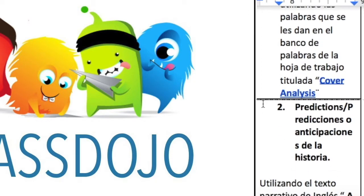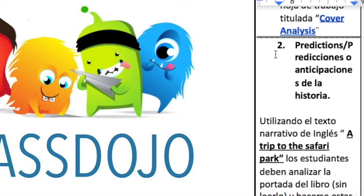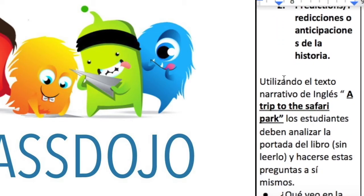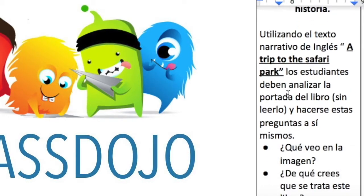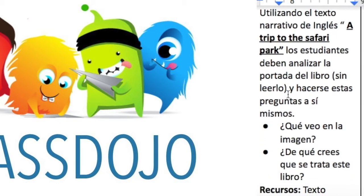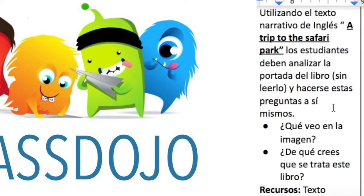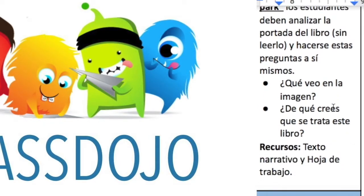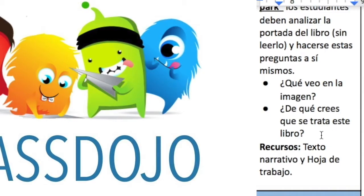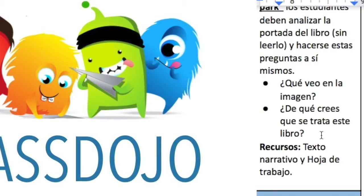Escribamos la fecha, recuerden, amores. La actividad número dos es también de nuestro libro A Trip to the Safari Park y tiene que ver con las predictions. Recuerden que para hacer las predictions no leemos el libro. Simplemente vemos las fotos, vemos el dibujo, analizamos el título y podemos anticipar o predecir de qué se va a tratar el cuento. Entonces ustedes van a escribir en el cuaderno las ideas de lo que ustedes creen que se va a tratar el texto. Ustedes mismos se pueden preguntar qué veo en la imagen, de qué se va a tratar, dónde está sucediendo esto, en qué momento está sucediendo esto, quiénes van a ser los personajes y van a escribir en el cuaderno de qué se trata esta historia.